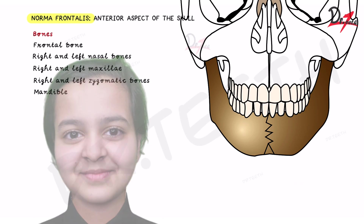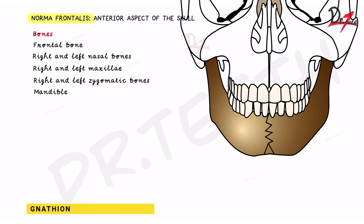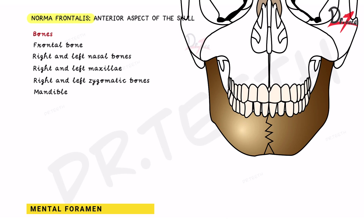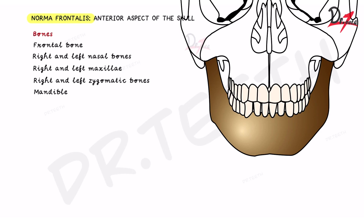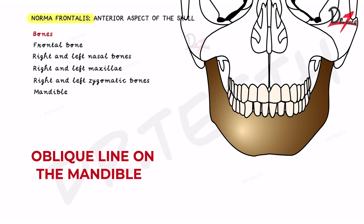The gnathion, also known as the mental point, is the midpoint of the base of the mandible. Then we have the mental foramen — a very important foramen of the mandible. It is located between the two premolar teeth, specifically between the first and second premolar, and is the opening known as the mental foramen.